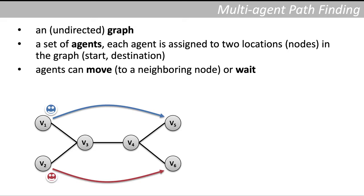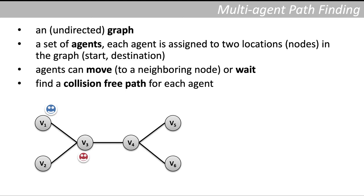The task of multi-agent pathfinding is to find collision-free paths for all the agents. Collision-free means that the agents are not allowed to be at the same time at the same location. For example, the red agent starts moving first and the blue agent is waiting because the node v3 is already occupied, and then they can move to reach their destinations.